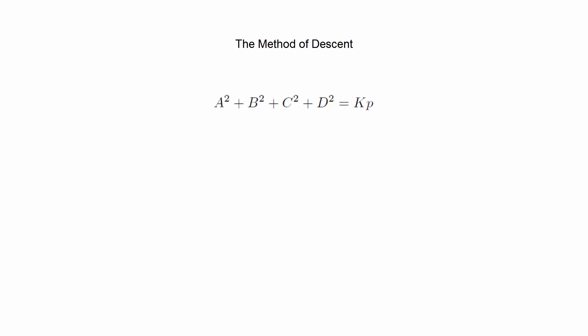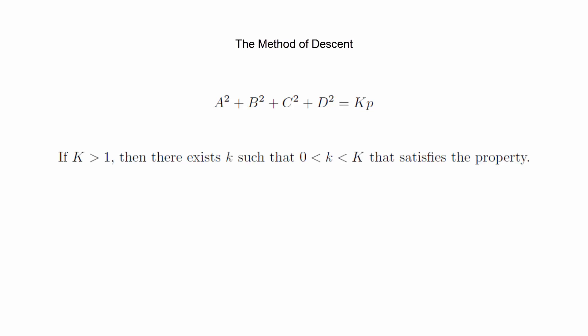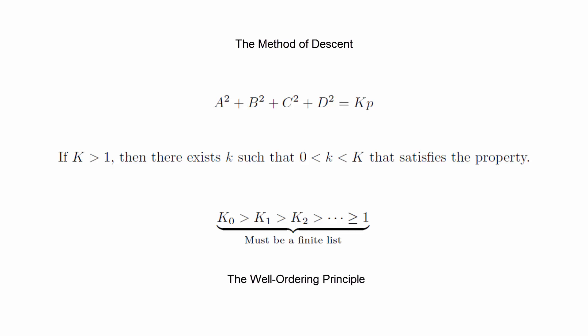We will now proceed to prove the main result. The method that we will use is known as the method of descent. The way this works is that we'll create an equation with a parameter capital K in it, where capital K is some positive integer, and where the theorem will be proven if capital K equals one. We will then show that if capital K is greater than one, we can solve the equation with a parameter little k that's smaller than capital K. By doing this repeatedly, we will get a decreasing sequence of positive integers, which means at some point the sequence must reach k equal one. This should feel a bit like induction because it's logically equivalent to it. The technical name of the property we're using is the well-ordering principle, which states that any non-empty set of natural numbers has a least element.